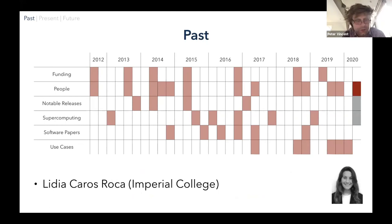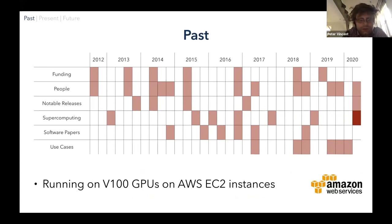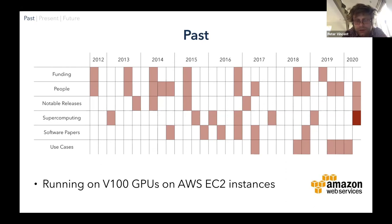Up to the present day, Lydia has just started her MSE project at Imperial and agreed to do a PhD from November onwards working on PyFR. Our current release, version 1.10, came out about a month ago. And as part of organising the PyFR tutorial day, we worked closely with Amazon to run PyFR on V100 GPUs on AWS instances — that worked incredibly well — and we certainly want to explore cloud deployment going forward.